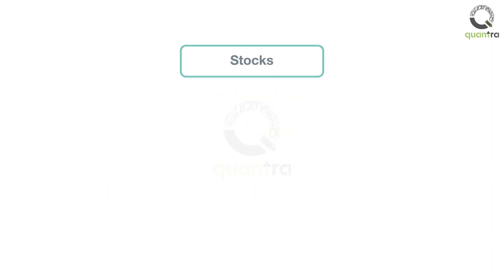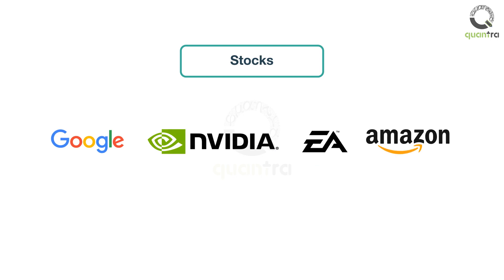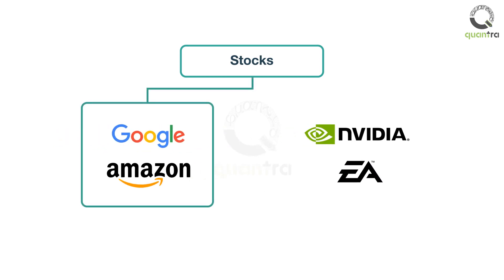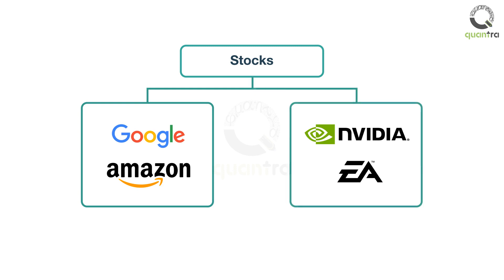Assume that you pass the daily return as a feature of four stocks: Google, NVIDIA, Electronic Arts, and Amazon. The hierarchical clustering algorithm puts Google and Amazon in one group, while NVIDIA and Electronic Arts are put in another. This grouping is done based on similarities between the individual stocks. The same information later becomes crucial while deciding the weight allocation for these stocks. This seems basic enough and can be done manually, but we will pass many more features and our asset universe will be large.